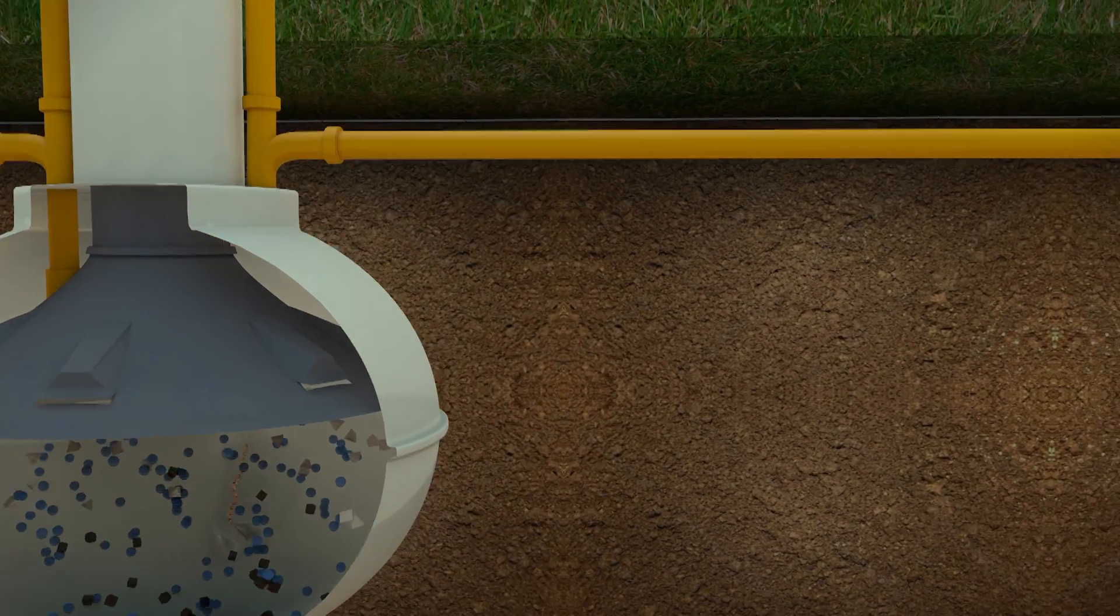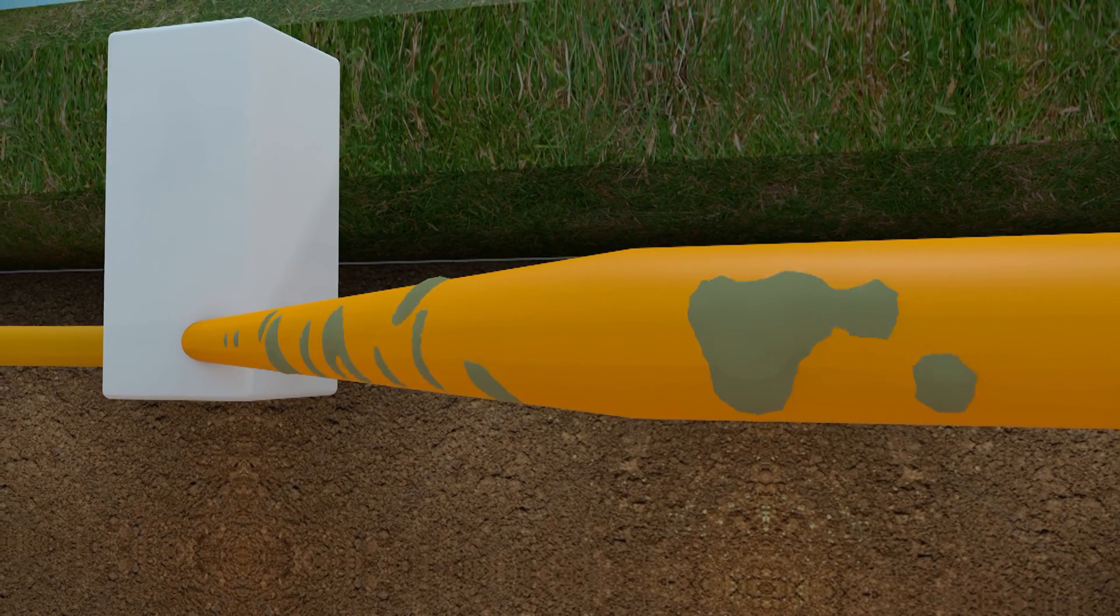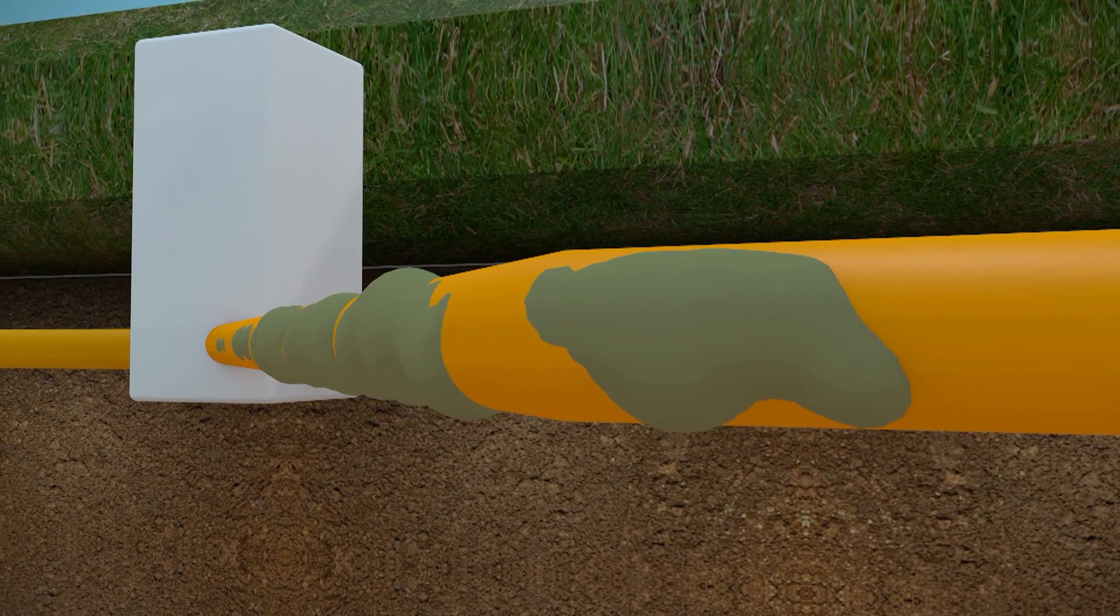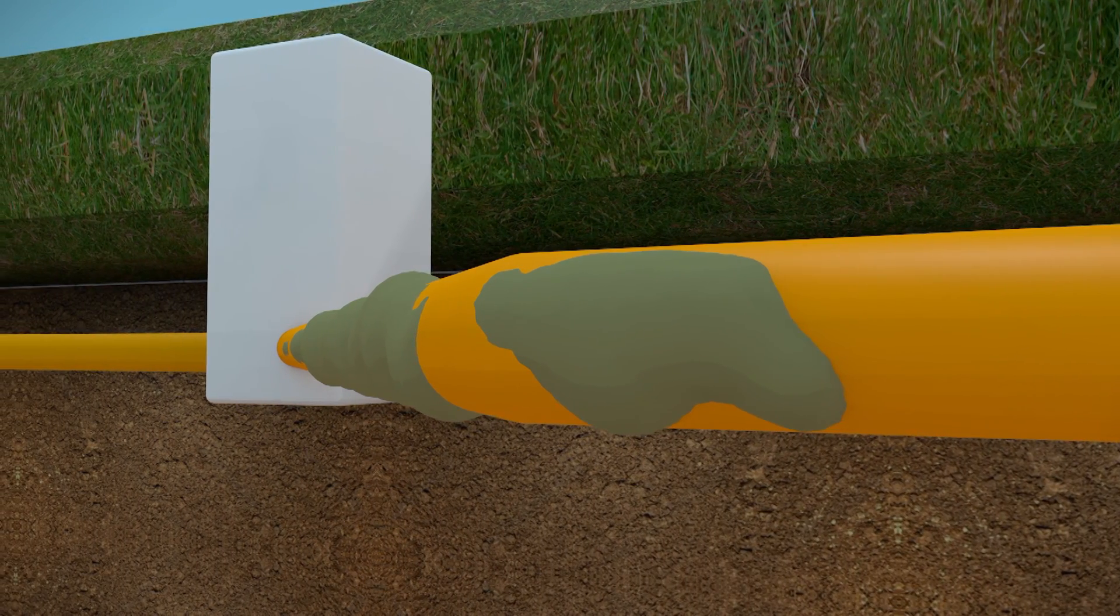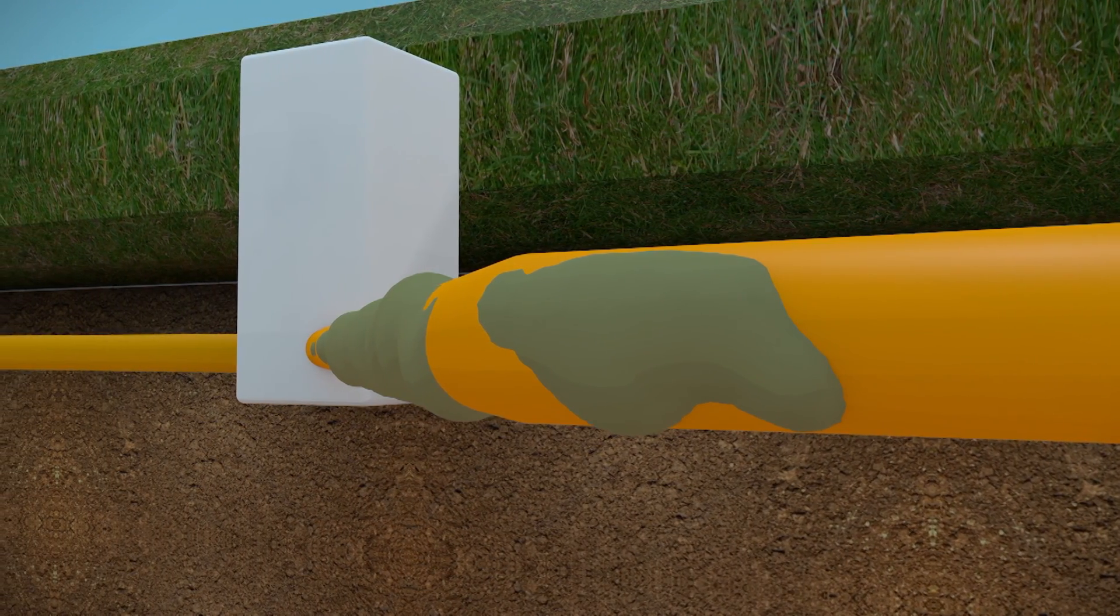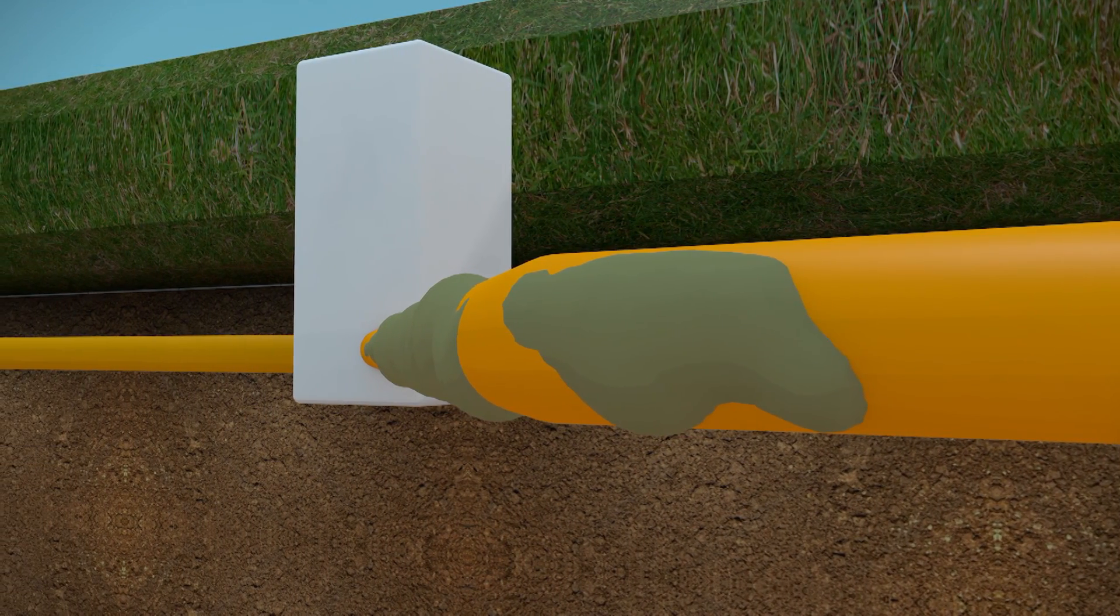When the wrong type of waste enters the soak away system, the solid material contained within the discharge fills the voids in the surrounding soil of the drainage field or soak away. This cannot be undone and any further treatment of the waste will be prevented as the system has become choked and exhausted.